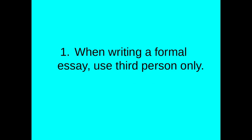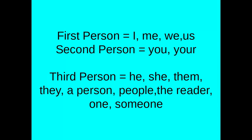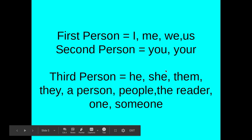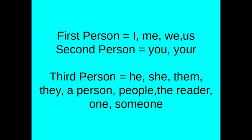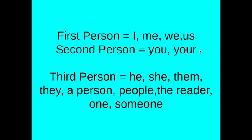Our first rule for formal essays is that when writing a formal essay, use third person only. Here is a reminder of first, second, and third person points of view. We want to use this last one — third person — and you have a lot of options here. The things you want to avoid are putting yourself in the essay. You should not be part of a formal essay; you're writing about a topic that is separate from yourself. And you should not be talking directly to your reader, so don't use second person — 'you' or 'your.'